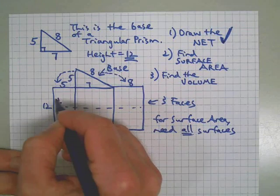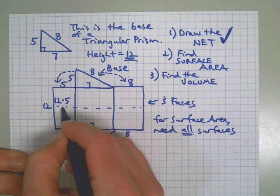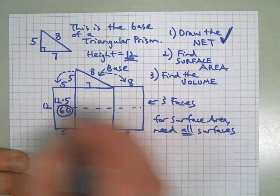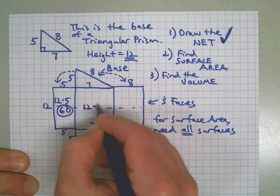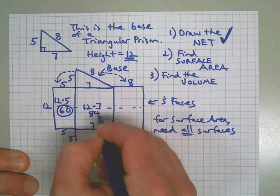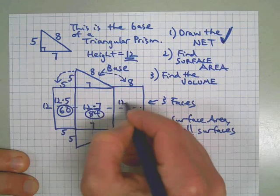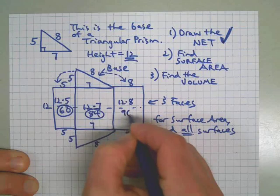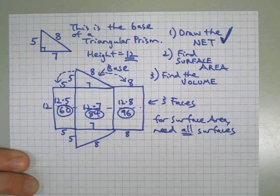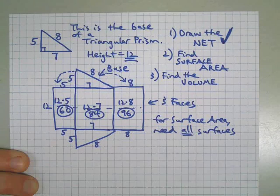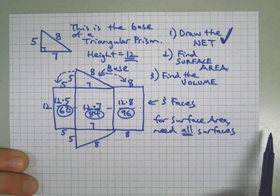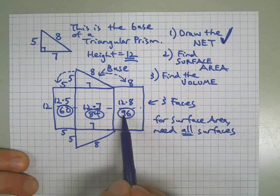So we have 12 times 5 for 60, we have 12 times 7 for 84, 12 times 8 for 96. I'm circling the answers as I go—it's a good practice. So when I go to find the total surface area, I know exactly where to look for my numbers. It saves me time and confusion.